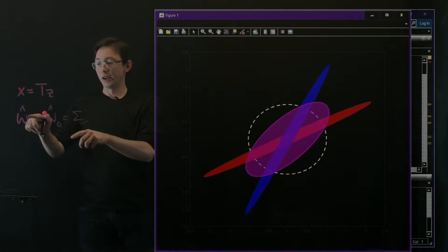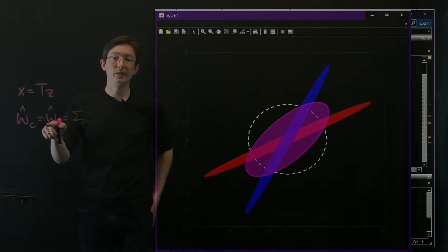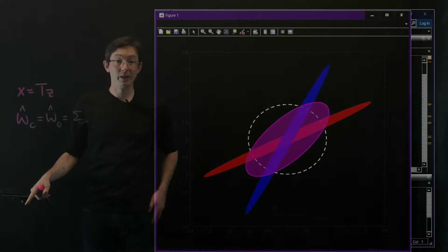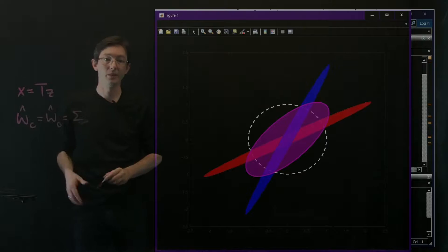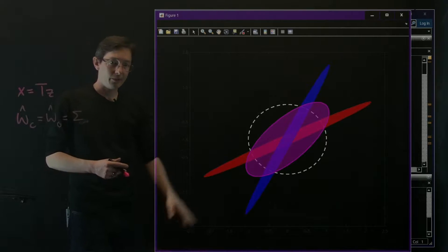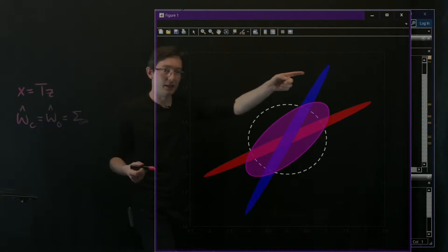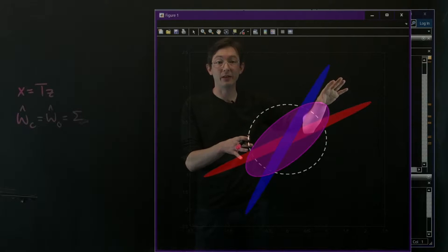So my controllability Gramian equals my observability Gramian equals a diagonal matrix where the entries are going from biggest to smallest. Now we're going to code this up in MATLAB. Again, just as an illustration, this is the end figure that we're going to generate.